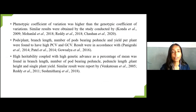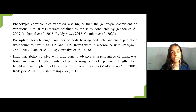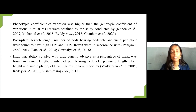The result of phenotypic coefficient of variation being higher than genotypic coefficient of variation was supported by Conda et al. 2009, Mohanlal et al. 2018, Reddy et al. 2018, and Johan et al. 2020. Results for high PCV and high GCV were in accordance with Panigrahi et al. 2014, Patel et al. 2014, and Gosola et al. 2016. Results for high heritability coupled with high genetic advance percent of mean were in accordance with Vakansa et al. 2005, Reddy et al. 2011, and Sushmita Raz et al. 2018.